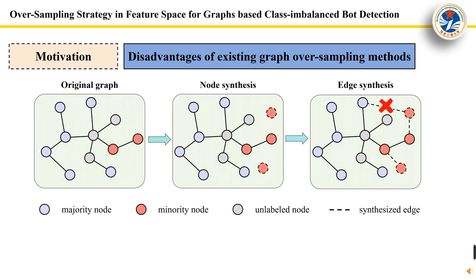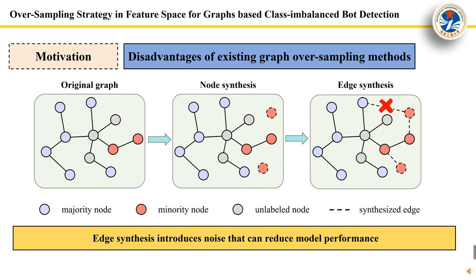However, current oversampling methods for GNNs first synthesize node features, and then synthesize edges for the newly synthesized nodes. The synthesized edges are not completely correct and additional noise is introduced in the process of synthesizing edges. So, how to remove the edge synthesis process?